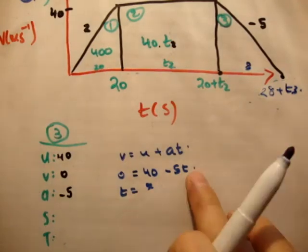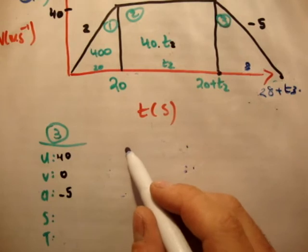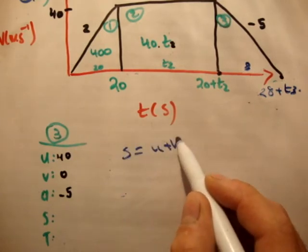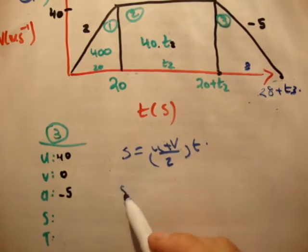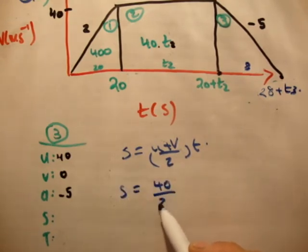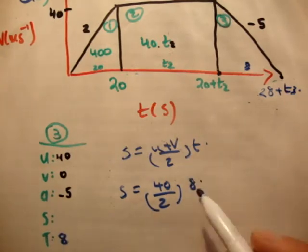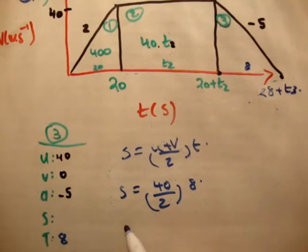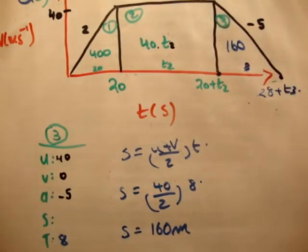It's distance. We'll try the usual, v squared equals u squared plus 2as. No, we won't. We'll try s equals u plus v over 2 times t. So we say s equals 40 plus 0 over 2 times t, which we said was 8. So that's 20 times 8, so that's 160 meters. So region 3 is 160 meters.